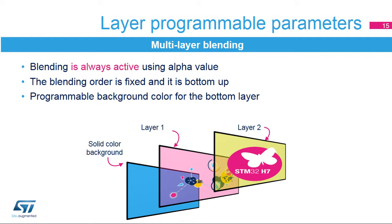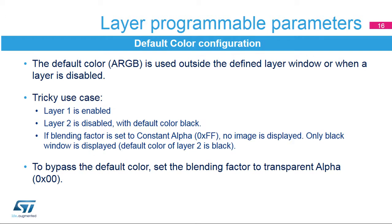The LTDC features configurable blending factors. The blending order is fixed and bottom-up: if two layers are enabled, layer 1 is first blended with the background color, then layer 2 is blended with the result. Each layer can have a default color in ARGB format, used outside the defined layer window or when a layer is disabled. Tricky use case: layer 1 is enabled, layer 2 is disabled with default color black. If the blending factor is set to constant alpha equals 0xFF, no image is displayed — only a black window. To bypass the default color, set the blending factor to transparent, alpha equals 0x00.